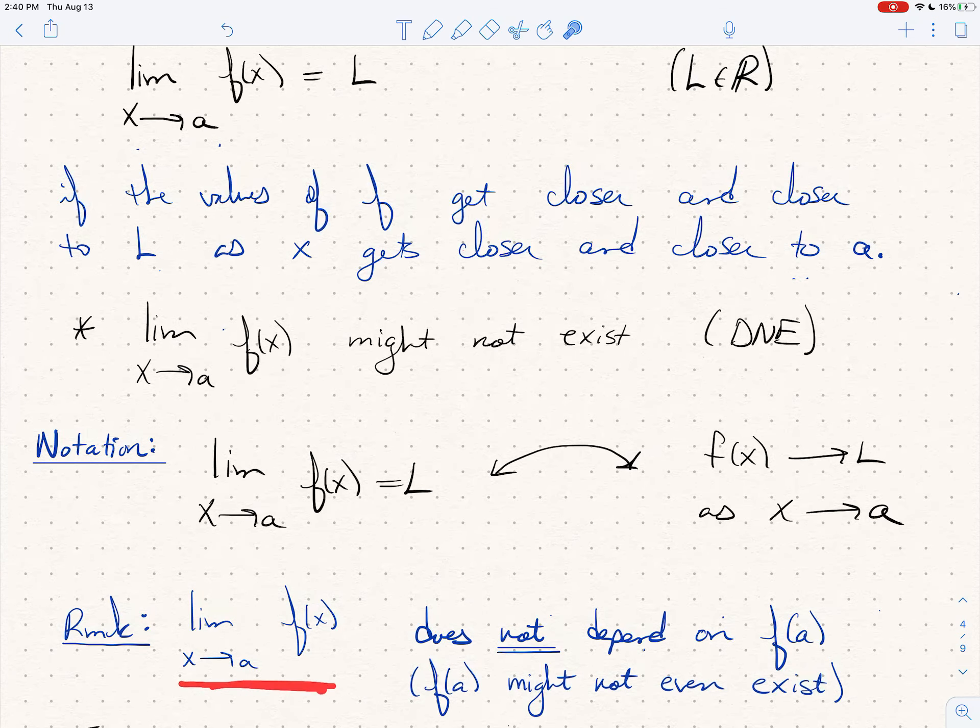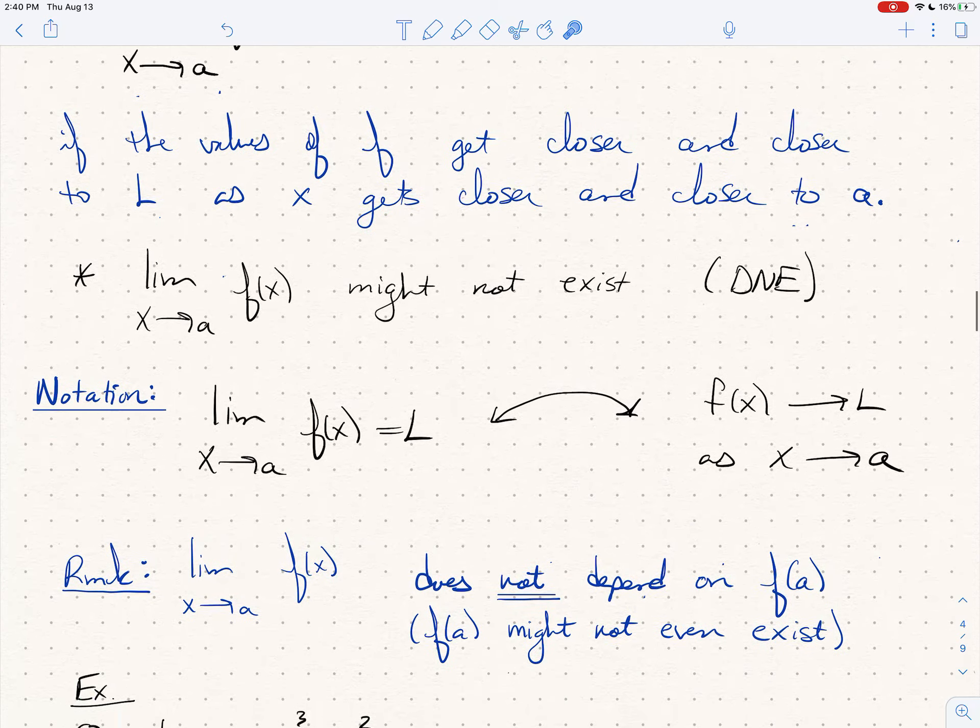And just to say it again: the limit as x goes to a does not depend on f(a). It's easy to think oh just plug it in, no, not in general. Sometimes you can do that but much of the time, in the interesting cases, you can't do that. This limit does not depend on f(a). f(a) might not even exist, so there might not even be an f(a) to talk about.